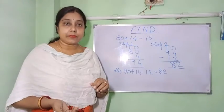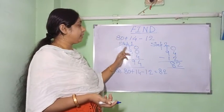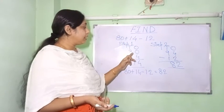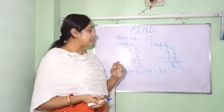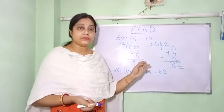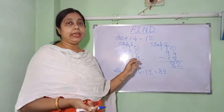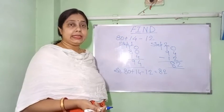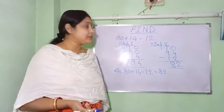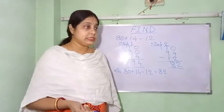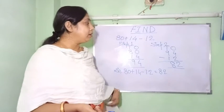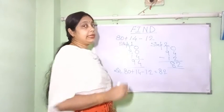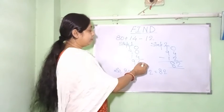Step one: we write down 80, then plus 14. So 0 plus 4 is 4, and 8 plus 1 is 9 — after adding 80 plus 14 we are getting 94. Now in step 2 we carry forward this 94.